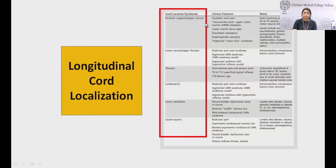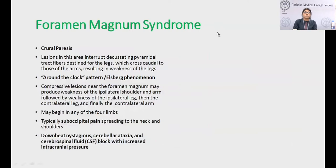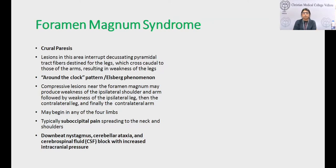In longitudinal cord localization, the levels are: foramen magnum or upper cervical, lower cervical or upper thoracic, thoracic, lumbosacral, conus medullaris, or cauda equina. In foramen magnum or upper cervical syndrome, the hallmark is cruciate paralysis, because lesions in this area interrupt decussating pyramidal fibers destined for the legs — which are more laterally placed and cross caudal to those of the arm — resulting in leg weakness and sometimes monoparesis.